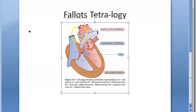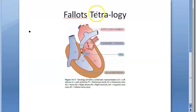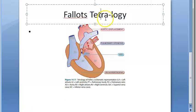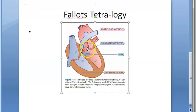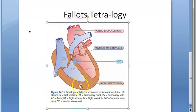Let us look at Fallot's Tetralogy. 'Tetra' means four, so there are four problems here. Basically, this is a congenital heart disease — by birth a person can have this problem. It is very common and is found in about 10% of children with heart anomalies.